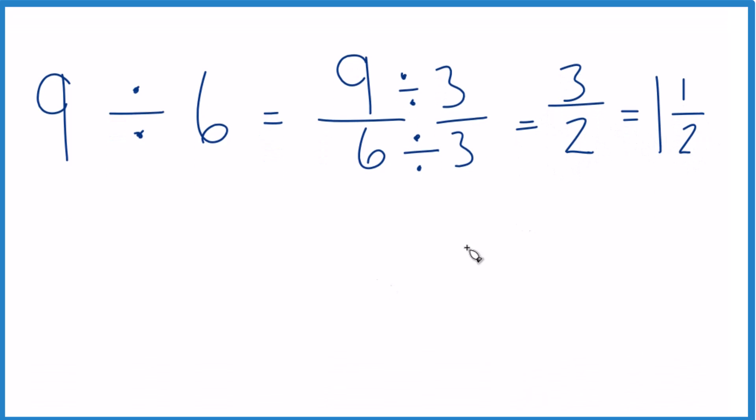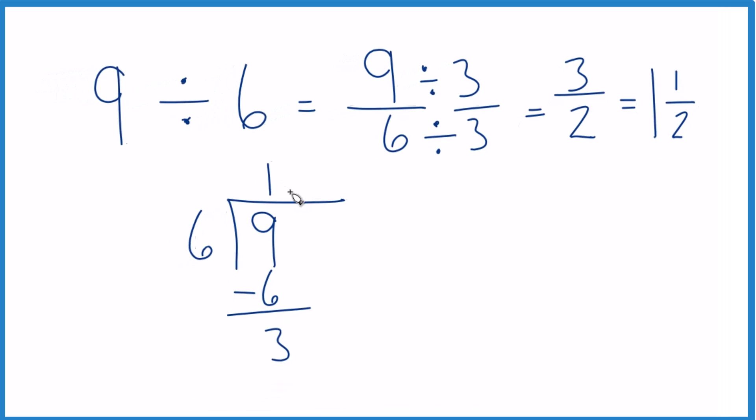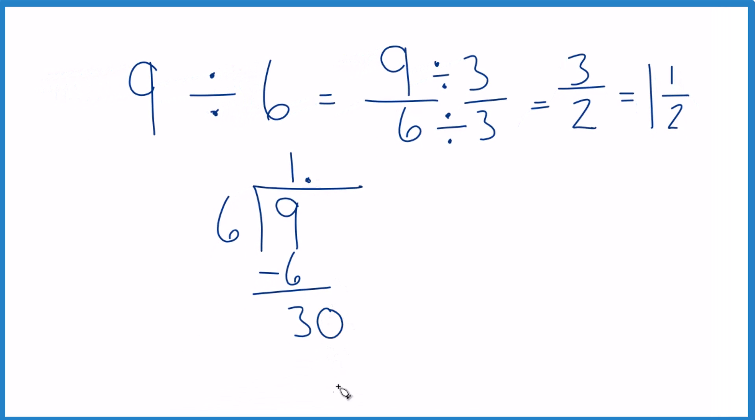The other way to do it is you could take 9 like this, see how many times 6 goes into 9. 6 goes into 9 once, so 1 times 6, that's 6, 3 left over. It doesn't go into 3, but we could put a point here and call this 30.